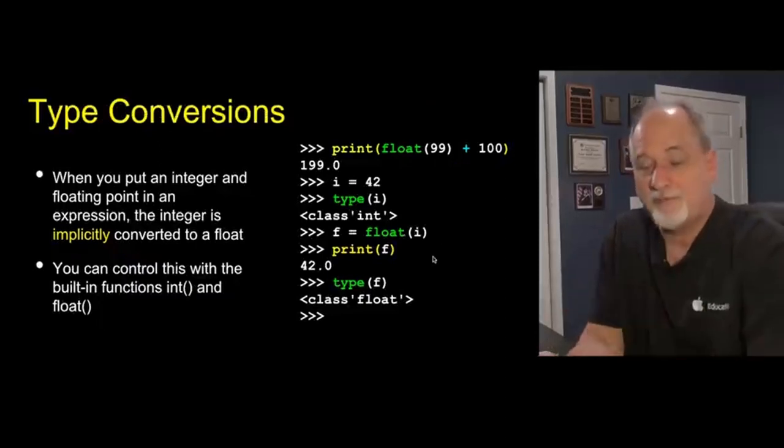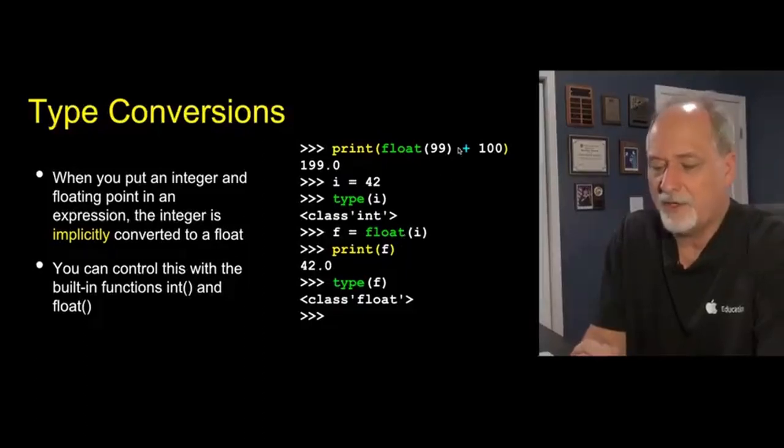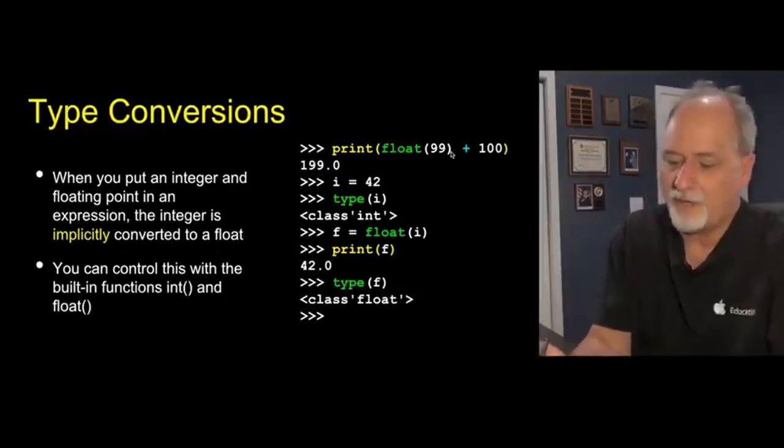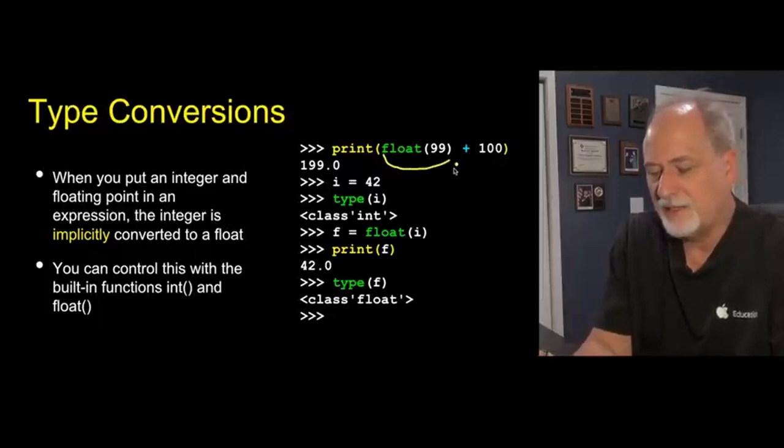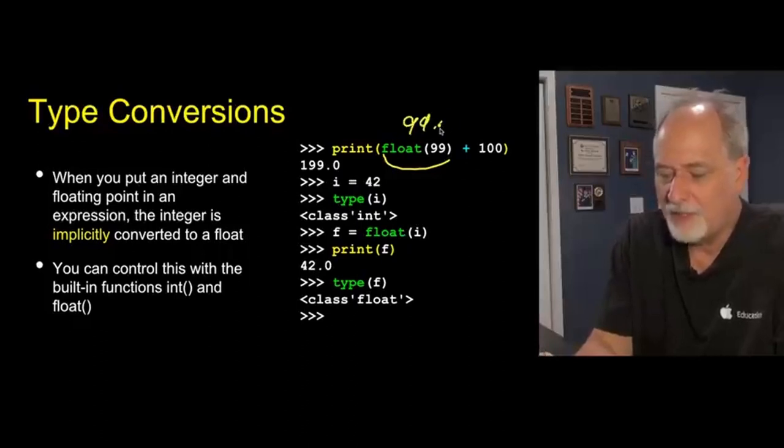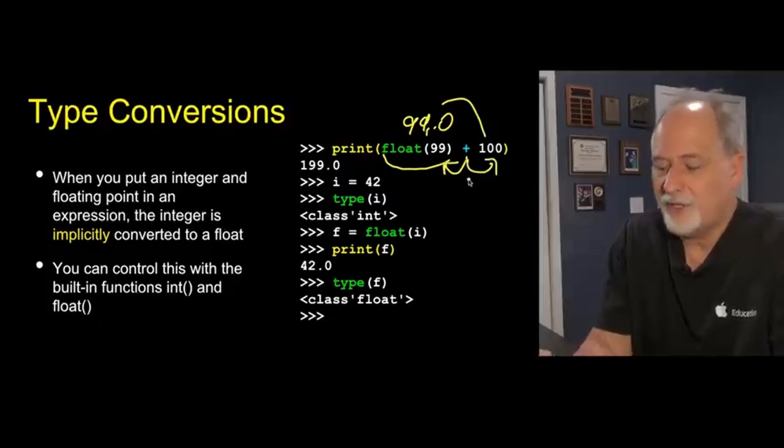You can also use a set of built-in functions like float and int to convert from one to another. This says I want to convert 99 to a floating point number. So this is a function and it's participating in this plus. Before it can finish the plus, it turns this into a 99.0. That actually turns this computation as it looks to the left and looks to the right, says oh I've got a floating point number on one side, an integer on the other side, so I'm going to make my calculation overall be a floating point calculation.